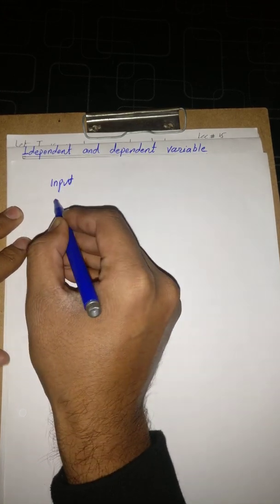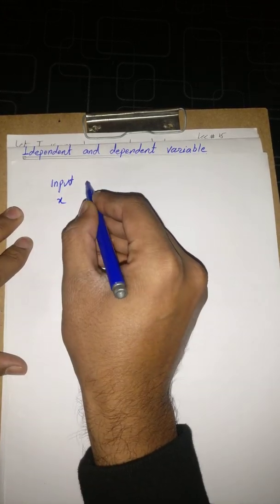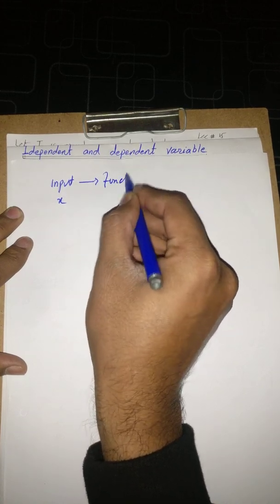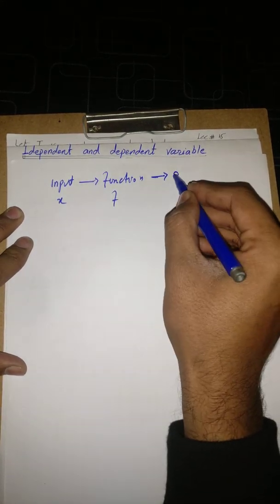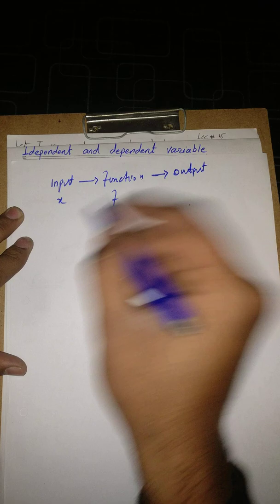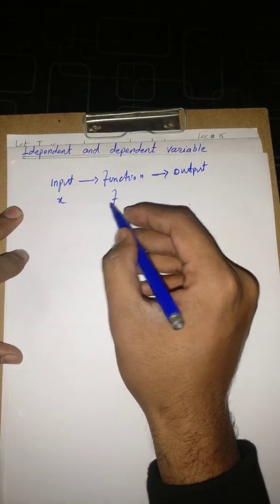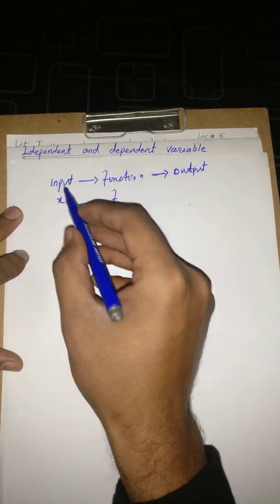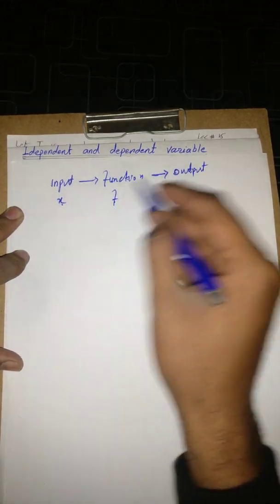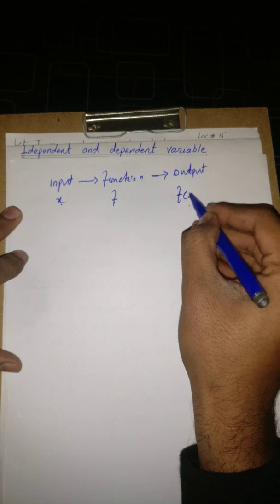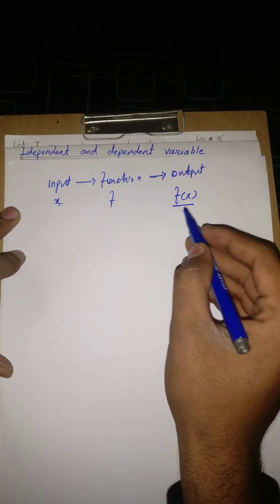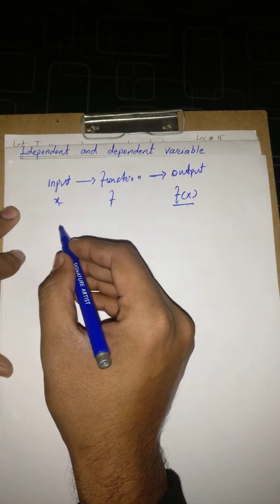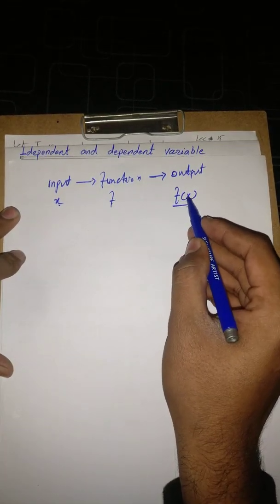Let's suppose our input value is X, here is some function F, and then it gives us some output. When we define the notation of a function, the input value is X, the function is F, and the output value can be written as F of X.